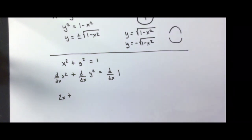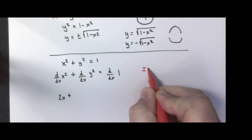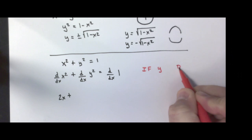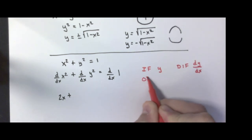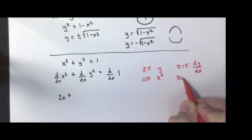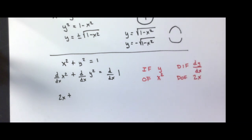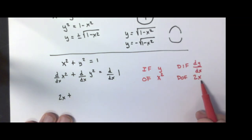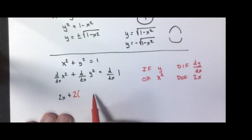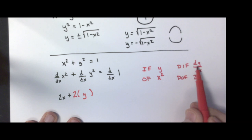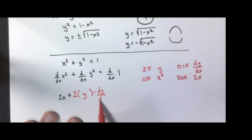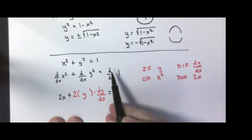The inside function is y, and the derivative of the inside function is dy over dx. The outside function is something squared, and the derivative of the outside function is 2 times that something. Using the chain rule, we take the derivative of the outside function — 2 times the inside function in parentheses — then multiply by the derivative of the inside function, which is dy/dx. The derivative of the constant 1 is 0.